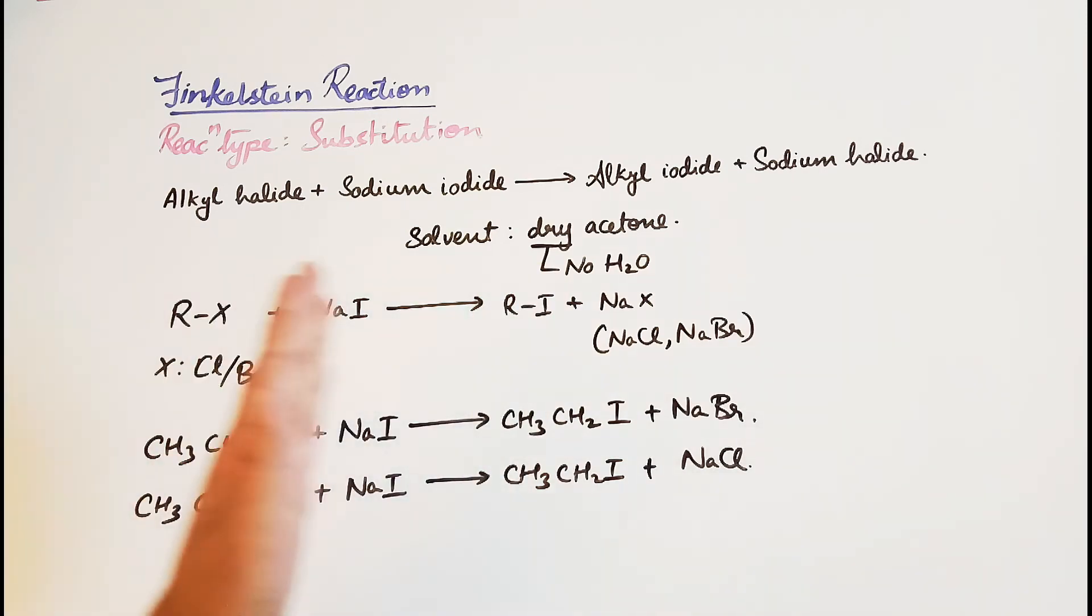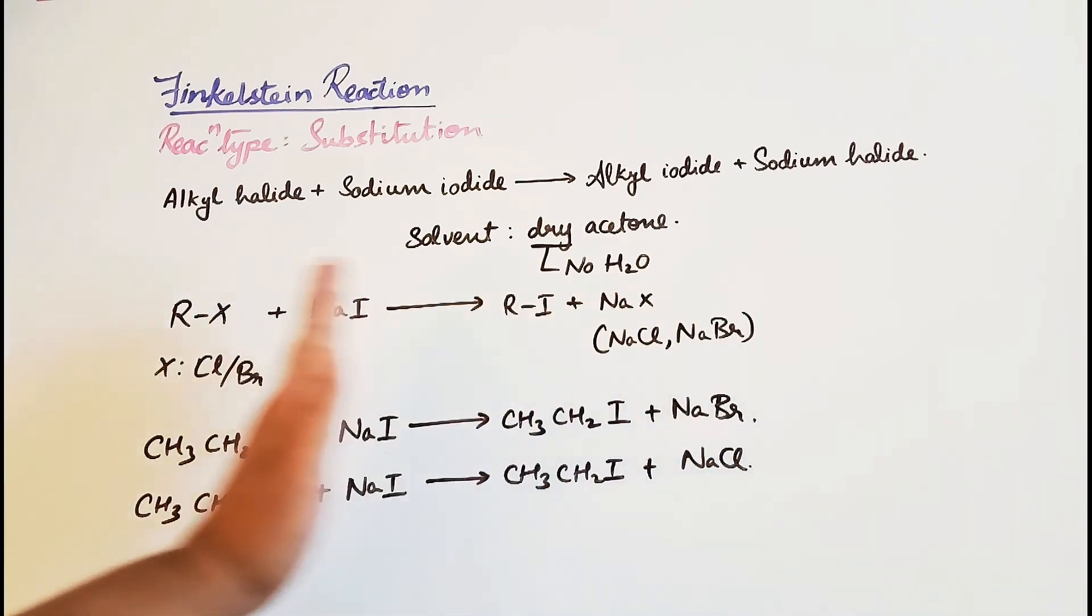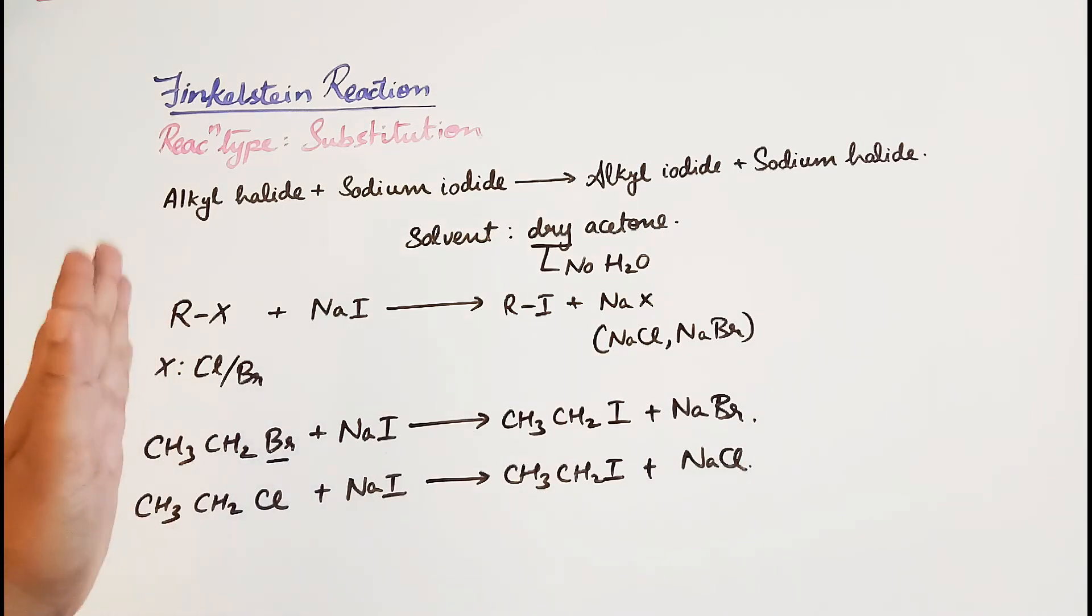We do not put a backward arrow. If the sodium halides were soluble, the reaction could go backward, which is not something we want. This reaction is used for the synthesis of alkyl iodides. In the next video, we'll discuss Swart's reaction.